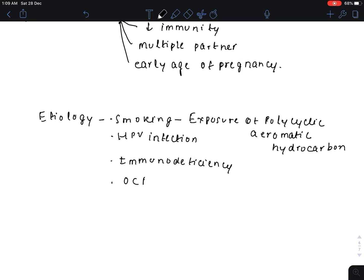The fourth etiology can be OCPs. OCPs alter the cervical tissue and pH is altered. Therefore there can be increased chance of cervical cancer.